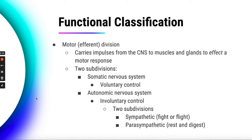The autonomic nervous system is further broken down into two subdivisions: the sympathetic nervous system and the parasympathetic nervous system. The sympathetic nervous system is associated with fight or flight, and the parasympathetic nervous system is associated with rest and digest. The sympathetic nervous system is used under stressful conditions — that fight or flight response of determining whether you should stay and fight the stressor or flee. Rest and digest refers to normal conditions in the body, like right now while you're sitting at your Chromebook.